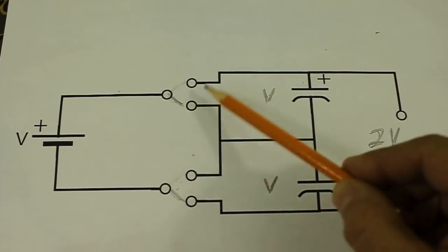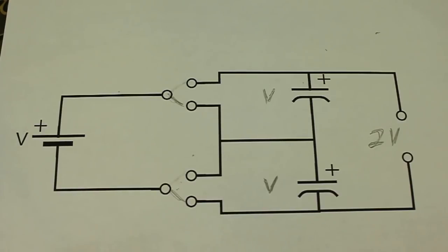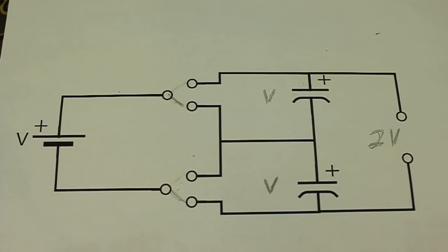Instead of two switches, we can use a single double pole, double throw switch, also known as DP-DT, which is basically two switches in one package.